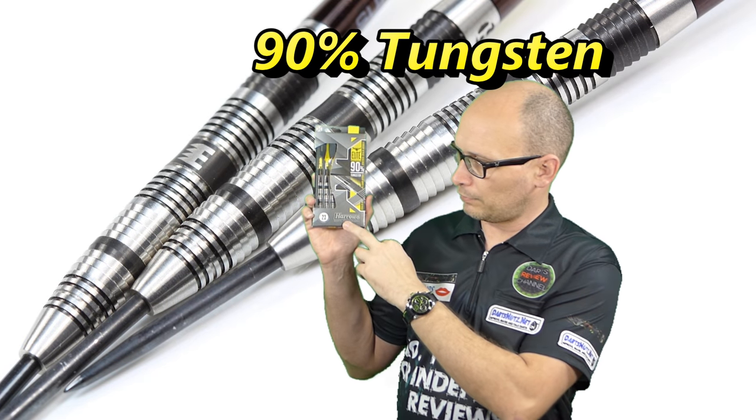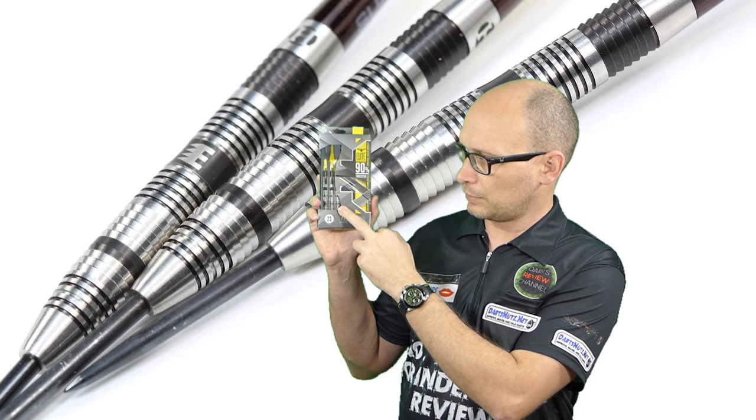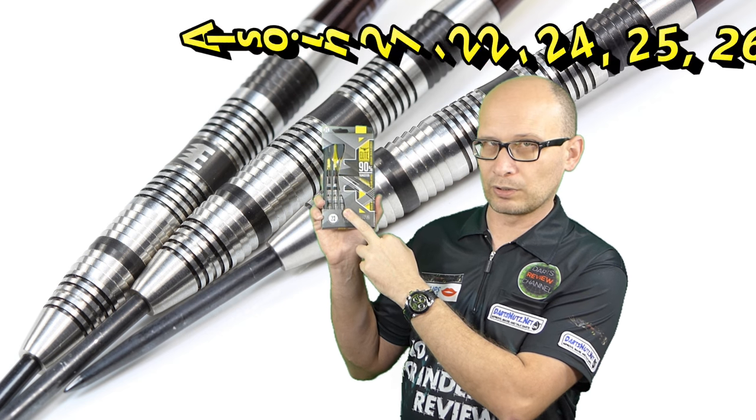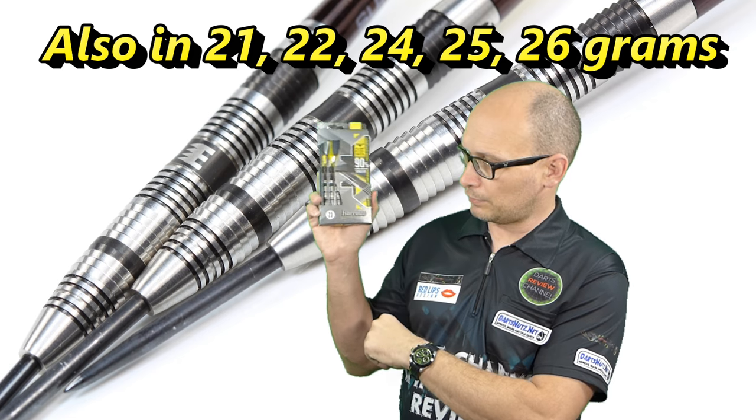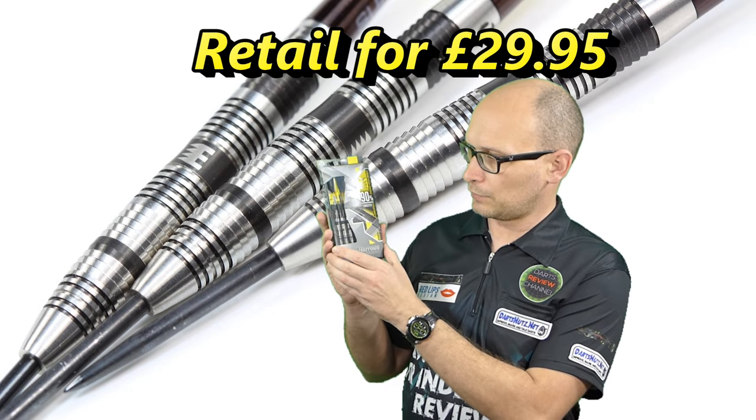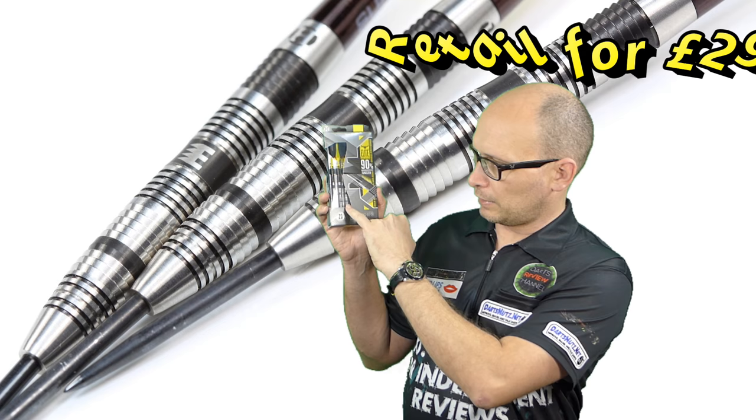This is the 23 gram model and there's only one version in this Elite range like the Cobalts. They go from 21, 22, 23, 24, 25 and 26 grams so you've got quite a range of weights to choose from.